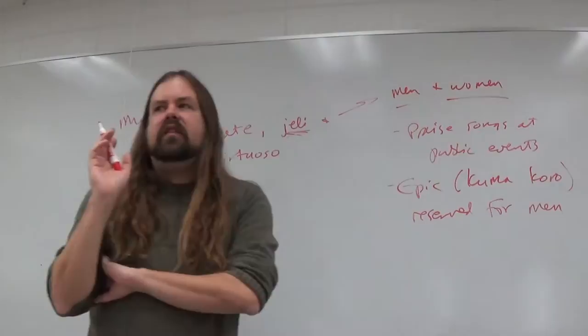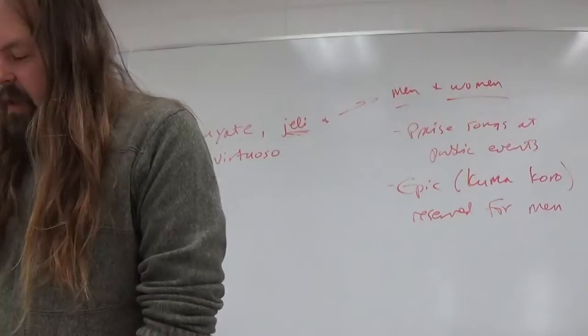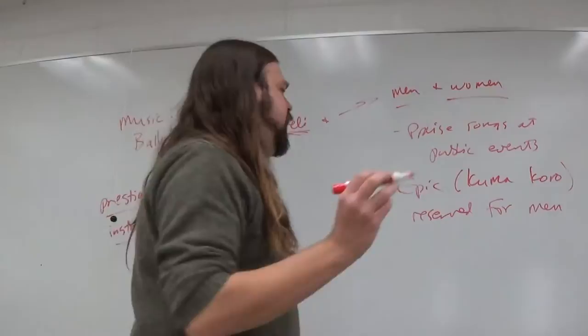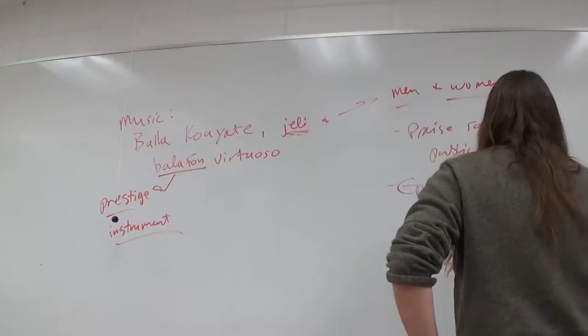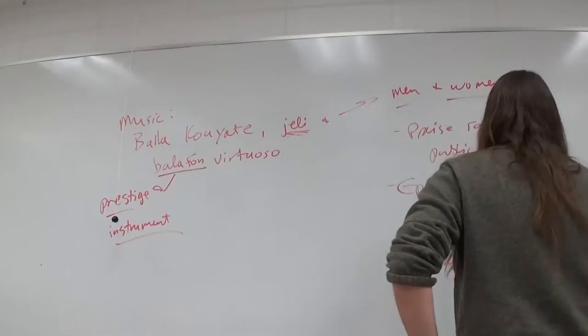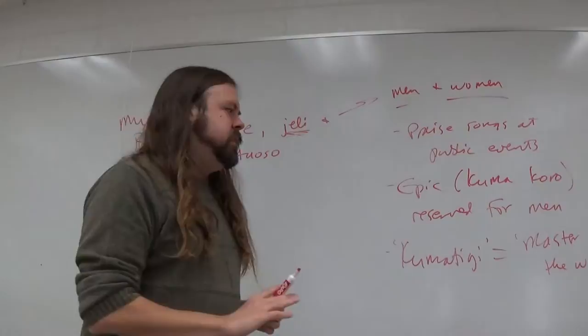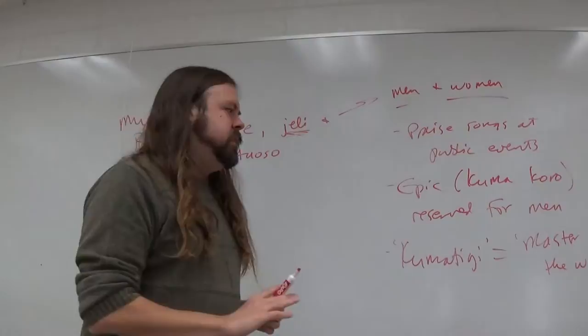Epic, on the other hand, or in the Malinke language, Kumakuro, has traditionally been reserved for men, and not even all men who happen to be of the jelly class. Usually each clan of jelly, of griot, has what's called a kumatigi. The kumatigi translates to master of the word.